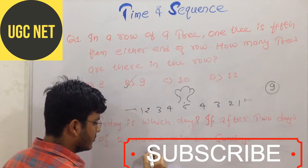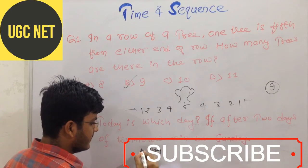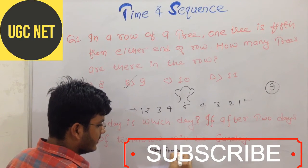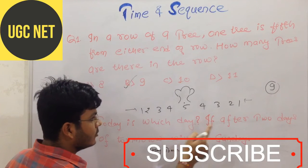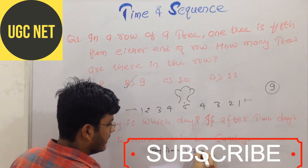So today suppose it is a day. Which day we have to calculate this. If after tomorrow, after tomorrow means it is tomorrow suppose, and after 2 days of tomorrow means 1 day after tomorrow and 2 day after tomorrow, it is a Sunday.